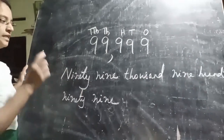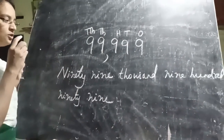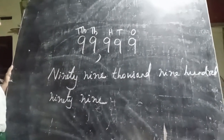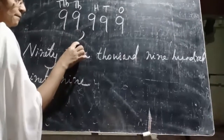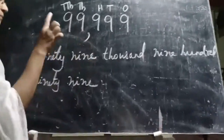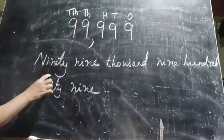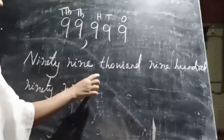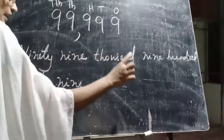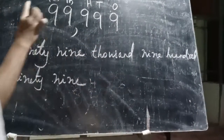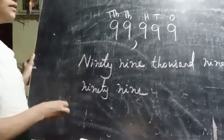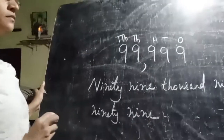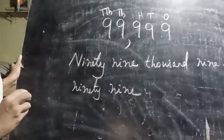Using the Indian place value chart, the largest five-digit number is ninety-nine thousand nine hundred ninety-nine. Thank you.